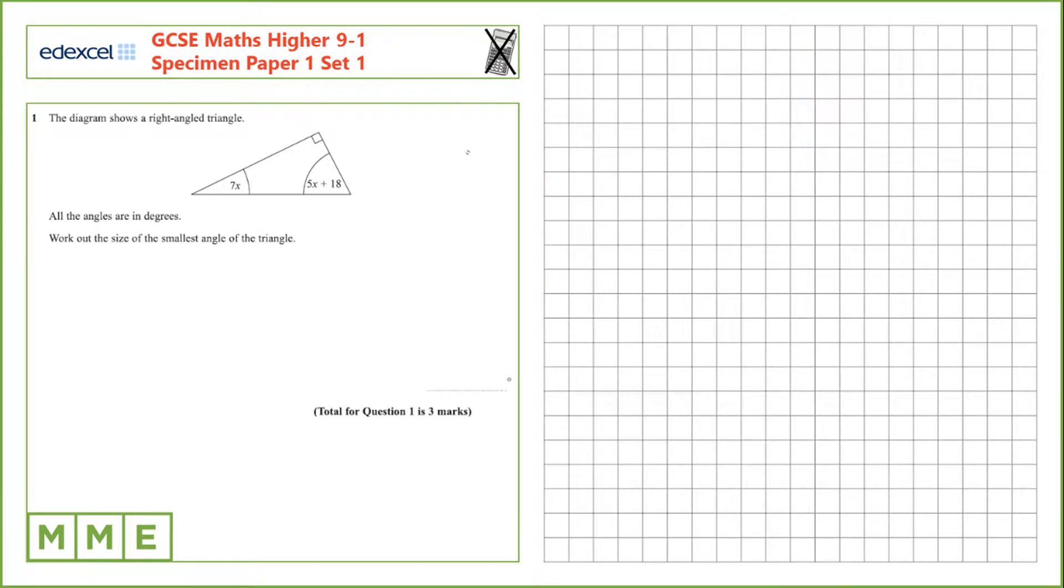Question one. The diagram shows a right angle triangle. All the angles are in degrees. Work out the size of the smallest angle of the triangle.